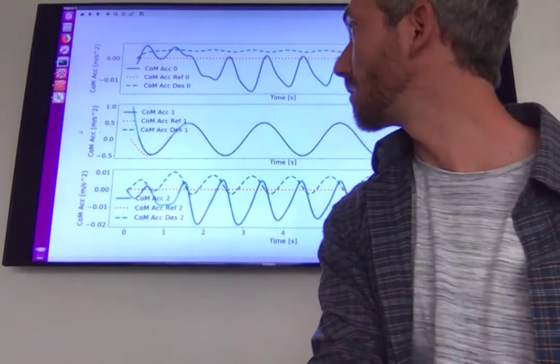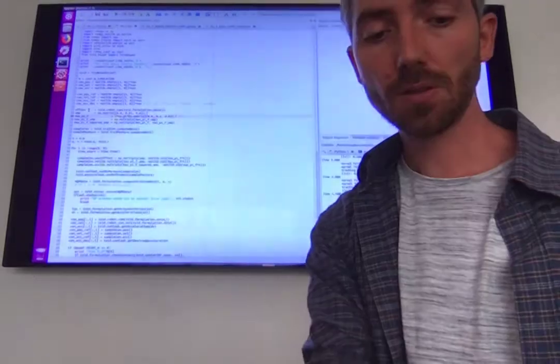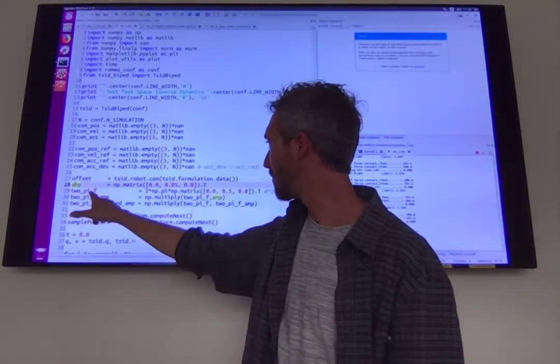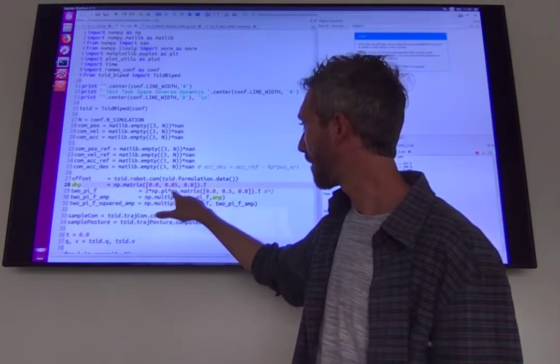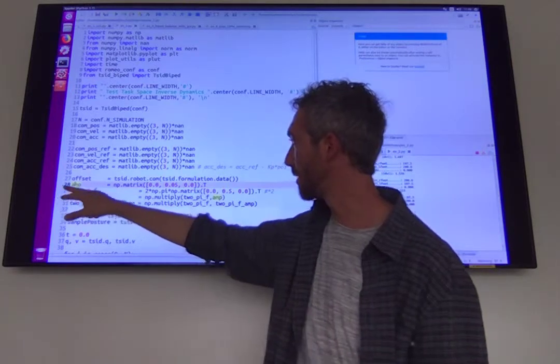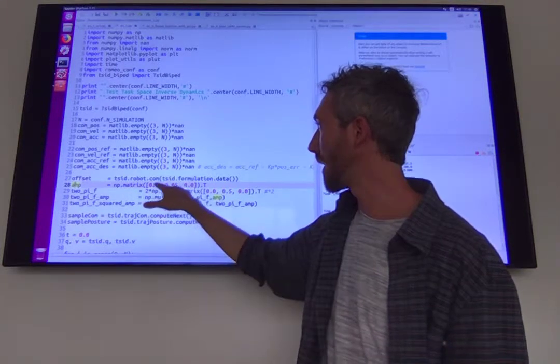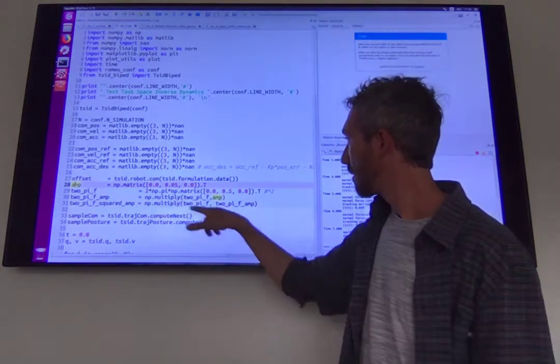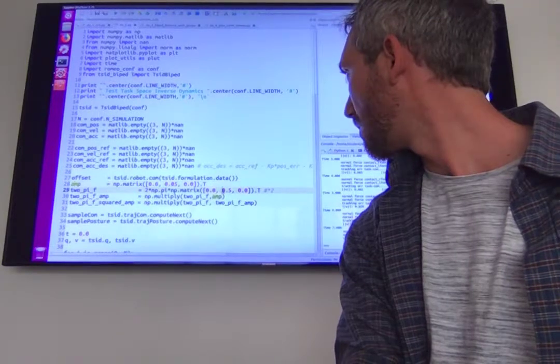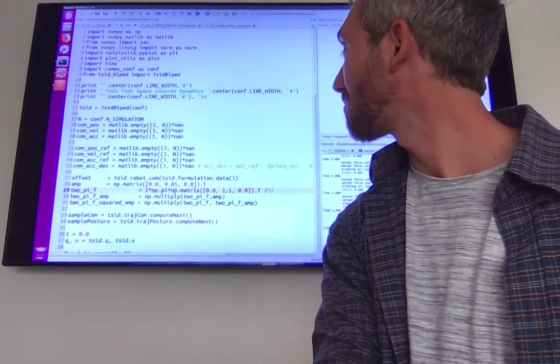Let's see what happens if we start increasing the frequency of the reference trajectory. So in the code, here in the beginning you have these parameters: amp, 2 pi f, which define the amplitude and the frequency of the reference trajectory for the center of mass. Line 28 and 29 of the script. So now the amplitude is set to five centimeters for the y direction and to zero for the x and z directions, and the frequency is set to 0.5. So let's try to increase it. I don't know at which point it will break, so I will just guess 1.5.